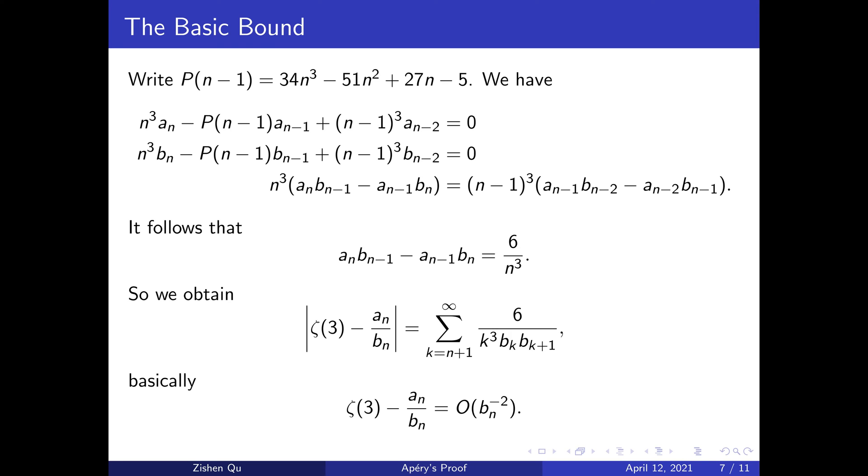Knowing that a_n/b_n converges to ζ(3), we can compute ζ(3) - a_n/b_n by computing the difference between subsequent terms and summing these differences. This gives us that the absolute value of ζ(3) - a_n/b_n is the sum for k from n+1 to infinity of 6/(k³ b_k b_{k+1}). So the error of this approximation is on the order of b_n^{-2}.